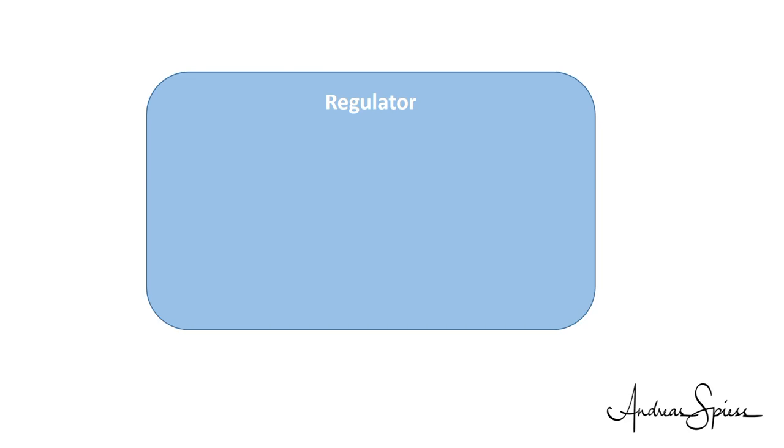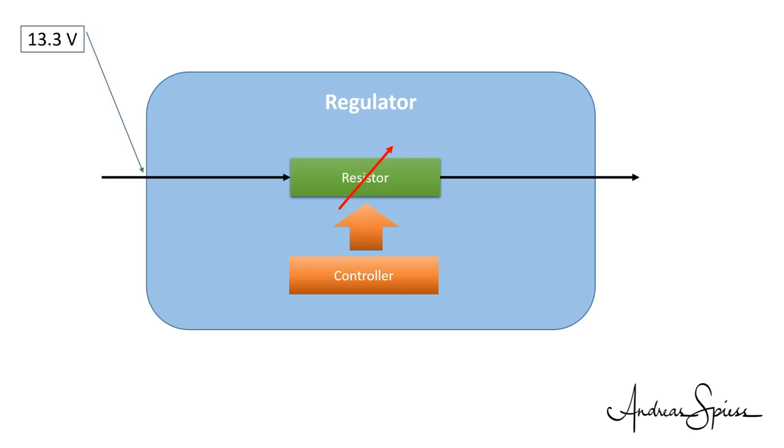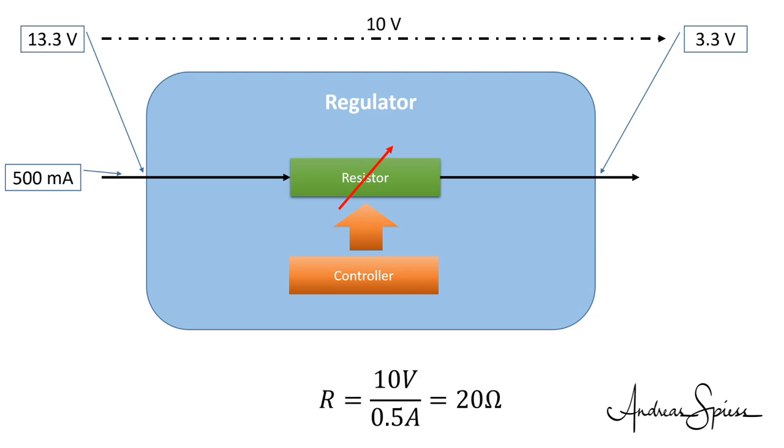A linear regulator consists of two parts. A variable resistor to destroy the unnecessary volts and a controller to adjust this resistor to achieve a constant output voltage. Let's assume for a moment we have 13.3 volts at the input and need 3.3 volts at the output at a current of 500 mA. Why 13.3 volts? Because it does not matter too much for our example and engineers like simple numbers to use mental arithmetic. The necessary resistor therefore is 13.3 minus 3.3 which is 10 volts divided by 0.5 ampere equals 20 ohms.